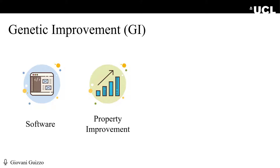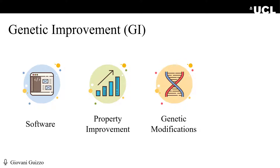In non-functional improvement, on the other hand, we aim at improving properties such as runtime, memory consumption, and energy consumption. For that, we represent the software into a genetic representation and apply modifications to this representation. For instance, we can represent it as a tree or a list of statements or lines. Then we can delete statements, swap lines, copy blocks of code, and so on.